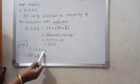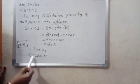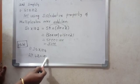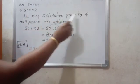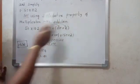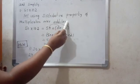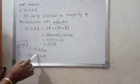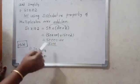Next: 42 into 101. Using the distributive property of multiplication over addition, simplify this.